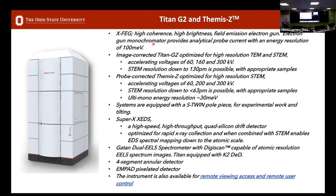Our image-corrected Titan is optimized for high-resolution TEM. We can also perform STEM at around 130 picometers resolution. We have three operating voltages: 60 kV, 160 kV, or 300 kV, so we can vary the beam energy to reduce damage to the sample while maintaining good resolution. Our probe-corrected Themis-Z is our high-resolution STEM — we converge electrons down to a sub-angstrom point. This gives us a STEM resolution of less than 63 picometers depending on the sample. With this system, energy resolution can go below 100 millielectron volts down to around 30 millielectron volts. It also operates at multiple voltages: 60, 200, and 300 kV.